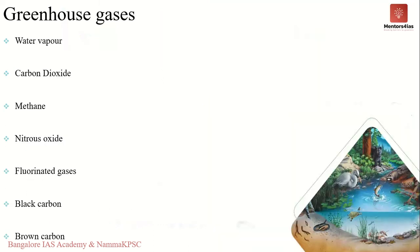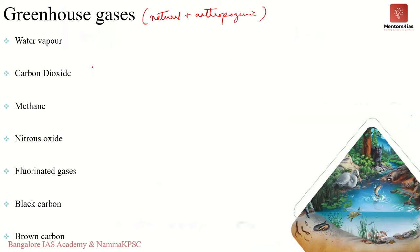Greenhouse gases are those gaseous constituents of the atmosphere — both natural and anthropogenic — which absorb and re-emit infrared radiation in the earth's atmosphere. We will now briefly discuss each of the important greenhouse gases and their role in trapping the energy re-emitted by the earth.